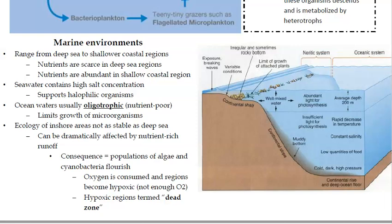The ecology of inshore areas is less stable than the deep sea and can be dramatically affected by nutrient-rich runoff. The consequence is that populations of algae and cyanobacteria become huge, reducing the amount of oxygen in the water for other organisms, creating hypoxic regions — also called dead zones.